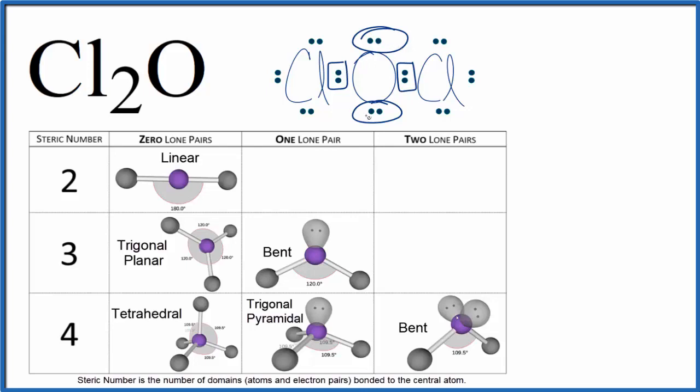So we have overall one, two, three, four different things. That's our steric number. And we have two lone pairs. That puts us over here. If we go over, this is a bent molecular geometry, and the bond angles are about 109.5.